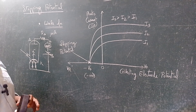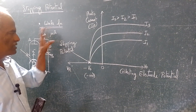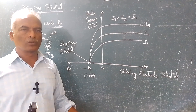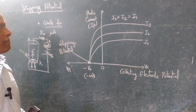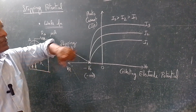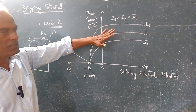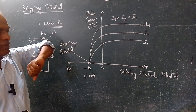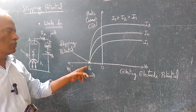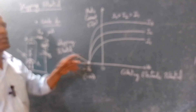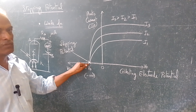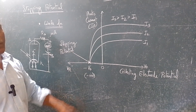Hope you have understood the concept of work function, how a photocell behaves in forward bias mode, how it behaves in reverse bias mode, and what happens when the intensity of light varies. When the intensity of light varies, the photo current also varies, whereas when you reverse the voltage, all are going to converge at one particular point where there is no emission of photo electrons. That particular reverse potential is called the stopping potential. Thanks for watching this video.